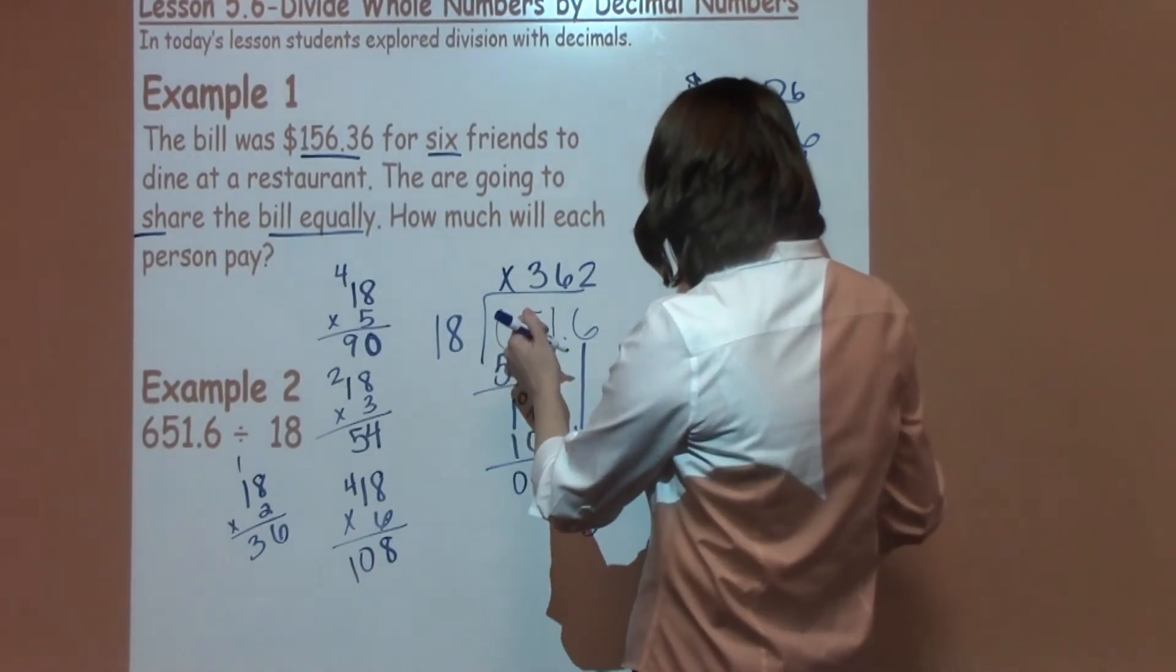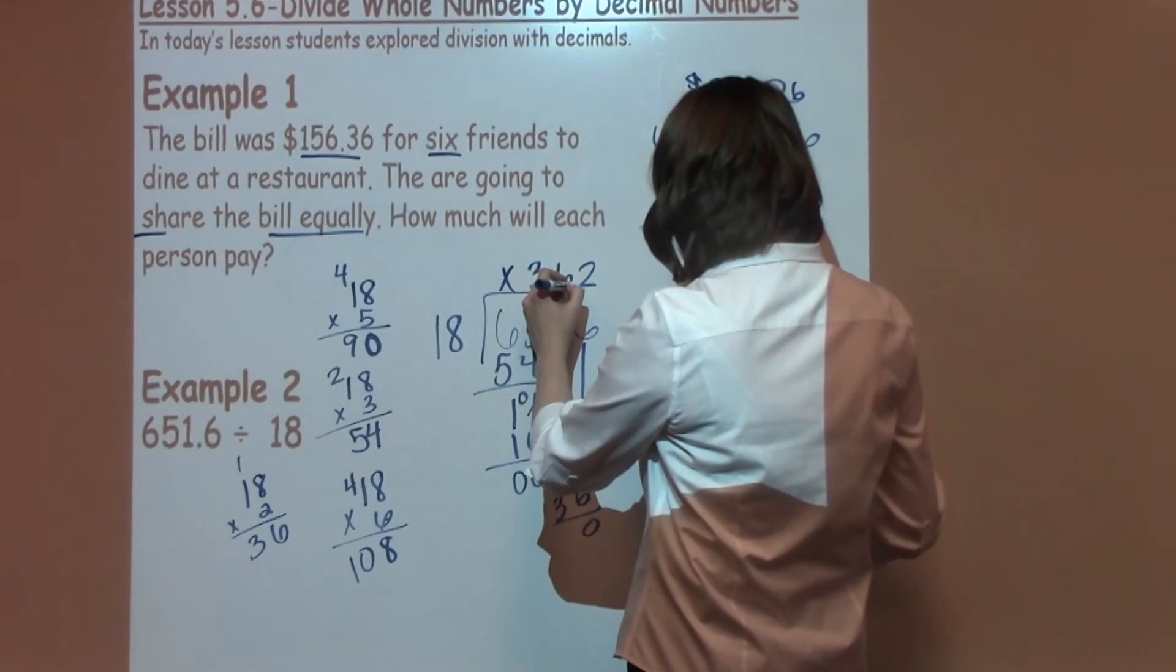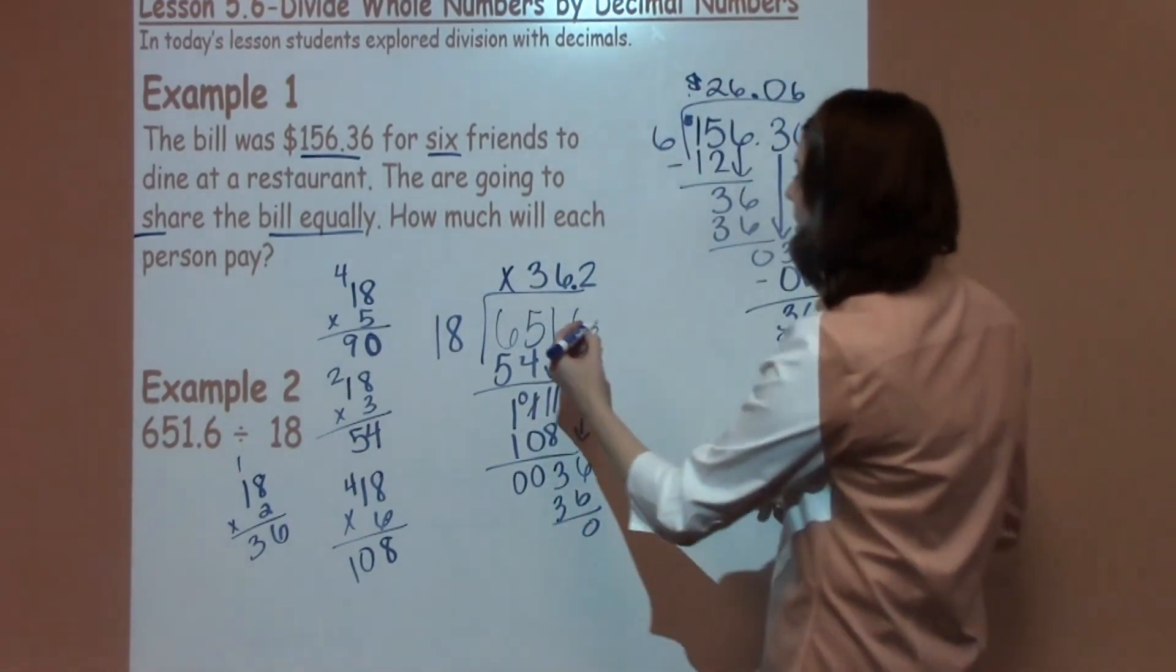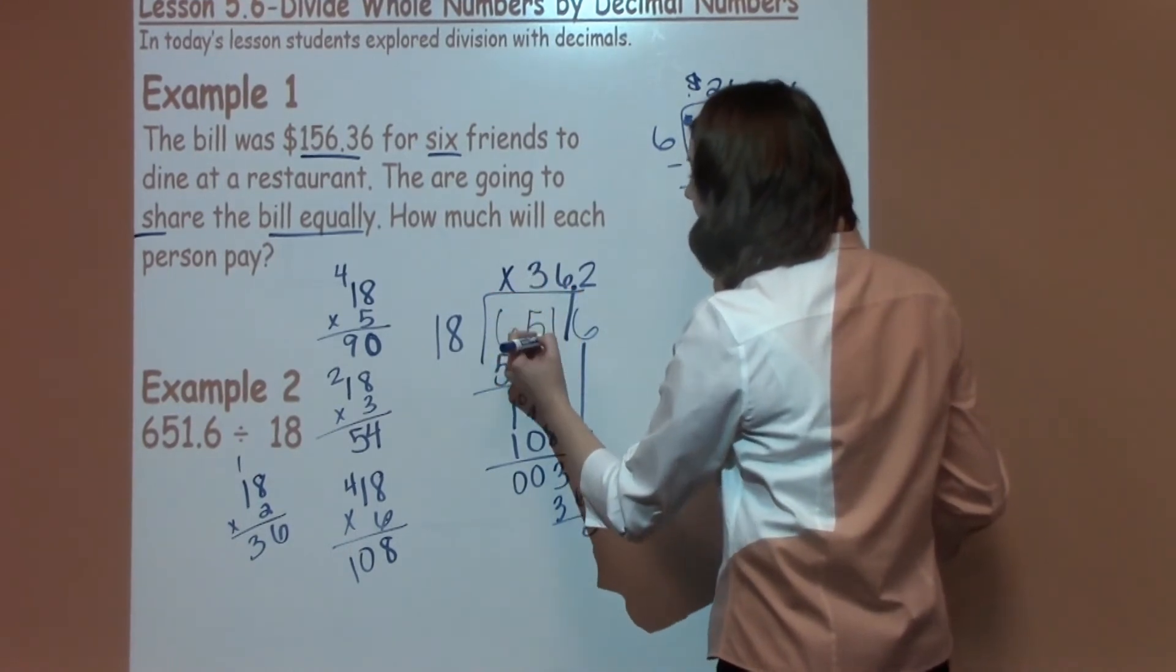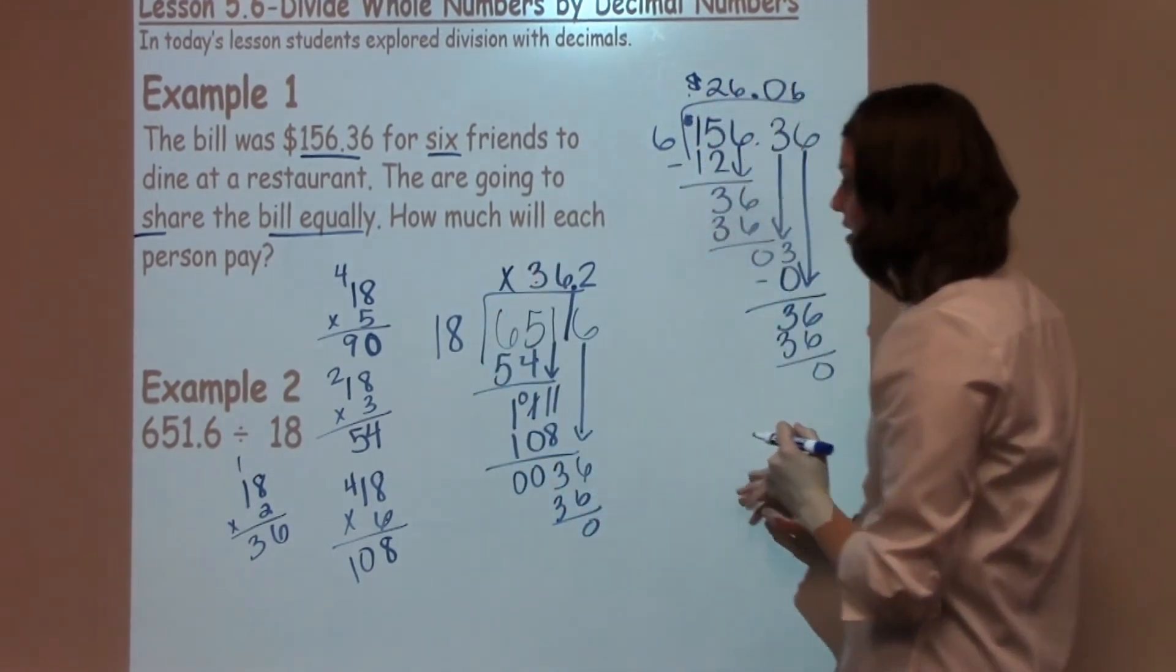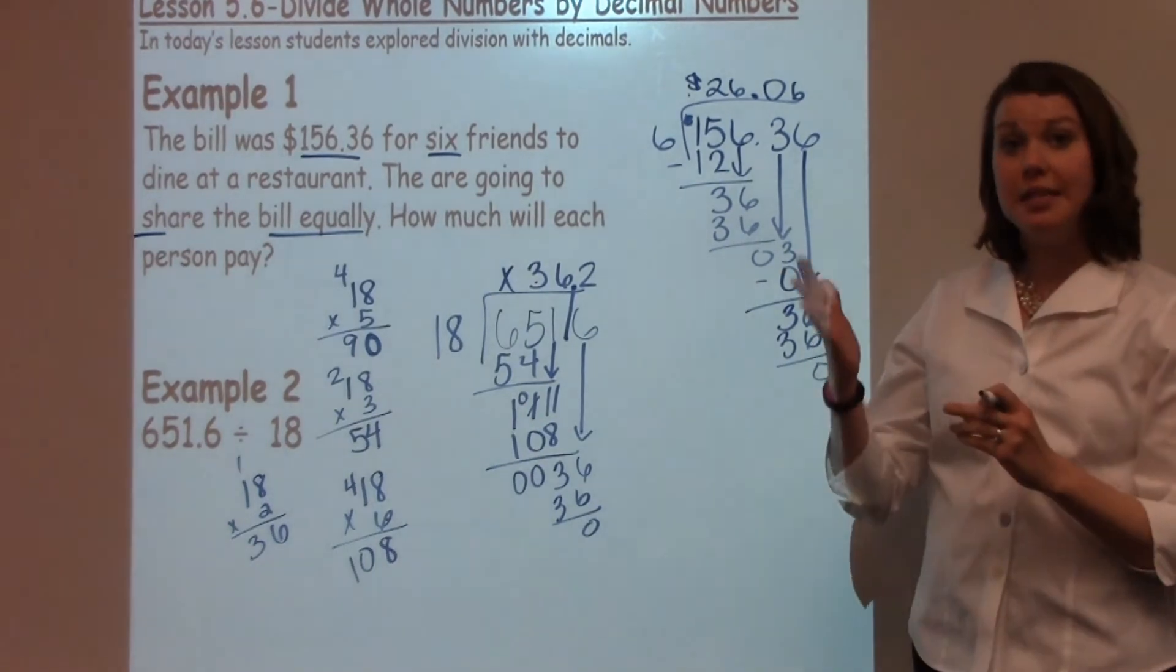Now, I need to place my decimal, so I'm going to bring up my decimal at this point. The one thing I really want to make sure of when I bring up my decimals, I just go straight up. That's why it's so important to make sure your numbers are lined up with the other digits on top of them, so that decimal placement is easy to bring up.